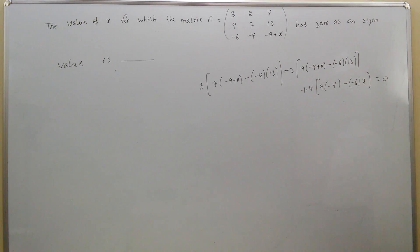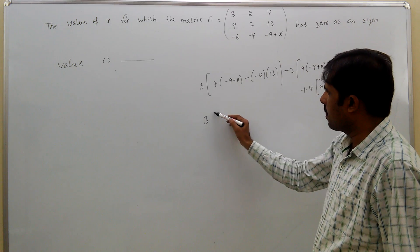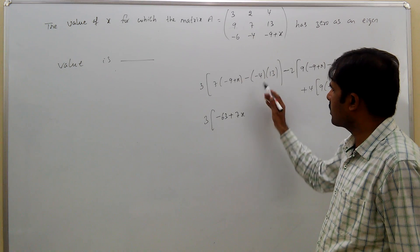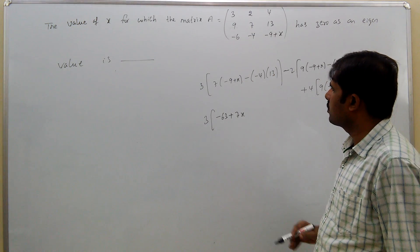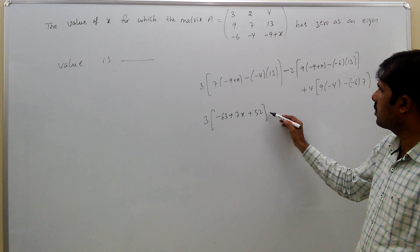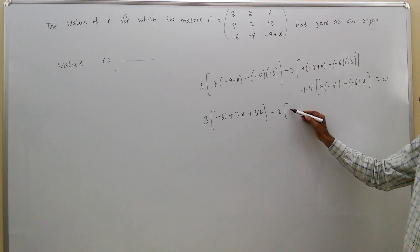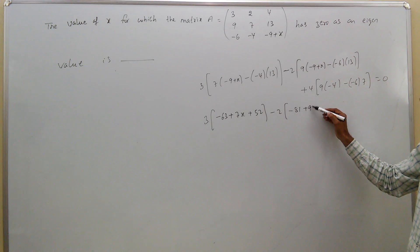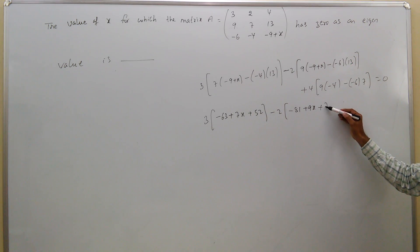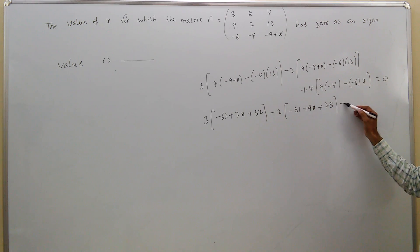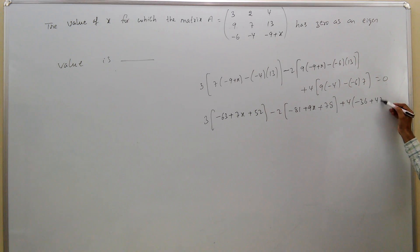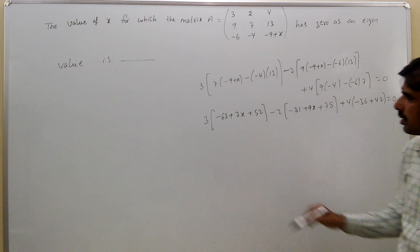Equal to 0. That means: 3 into [7 into minus 9 is minus 63 plus 7X, and 13 into 4 is 52] plus 2 into [9 into minus 9 is minus 81 plus 9X, minus 13 into 6 is 78] plus 4 into [minus 36 plus 42] equal to 0.